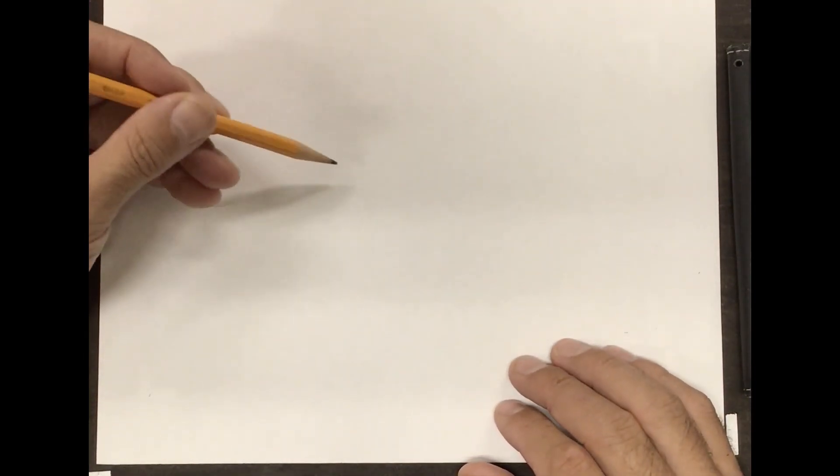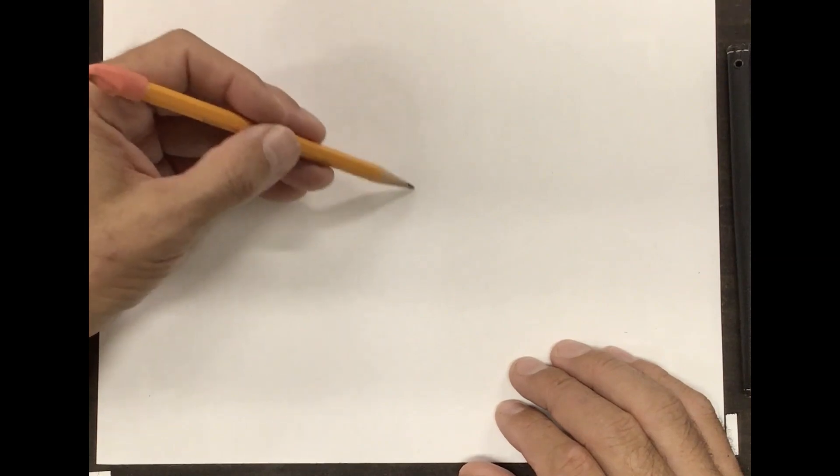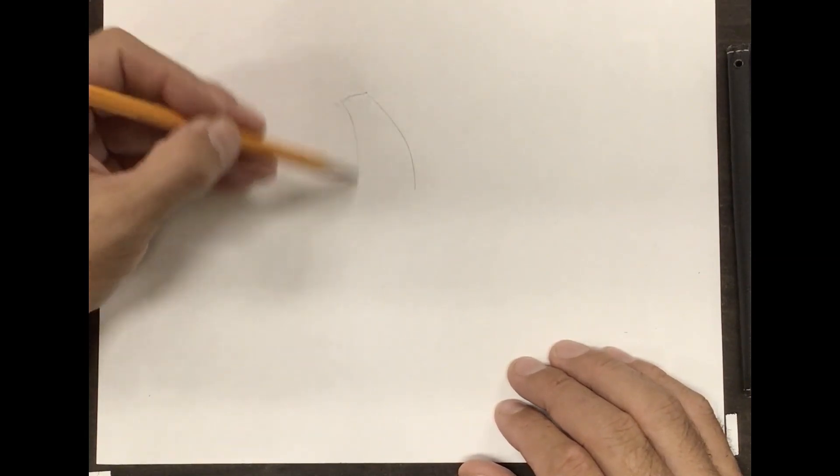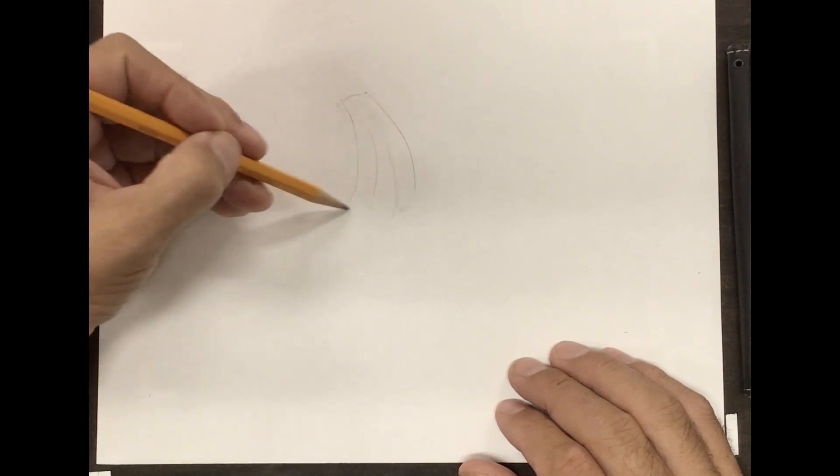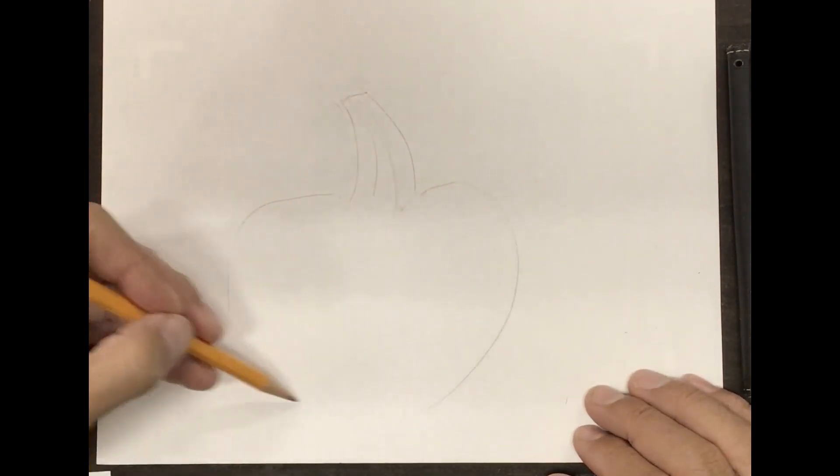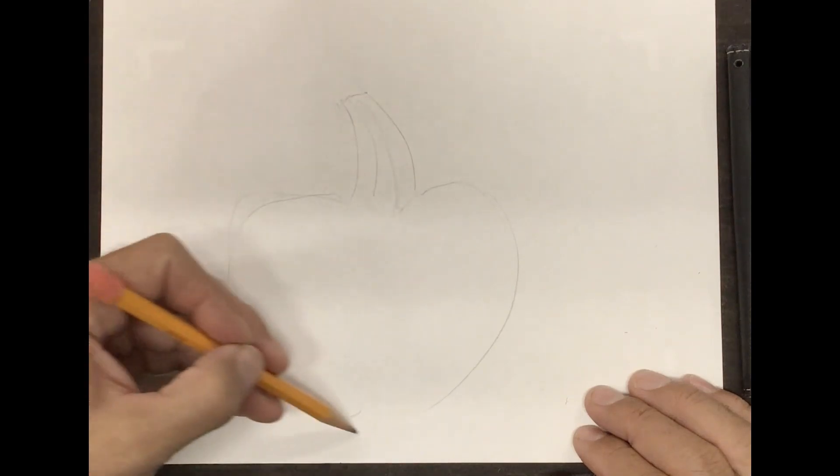But we're gonna do continuous. I'm gonna do something kind of fall theme, so let's see, we'll do a pumpkin. I'll do a pumpkin, and as always I like to do a kind of concept drawing first.